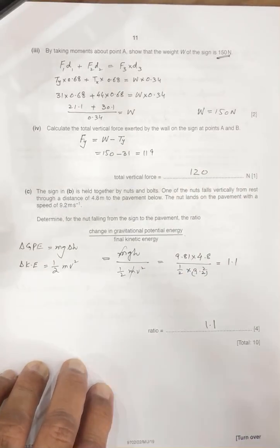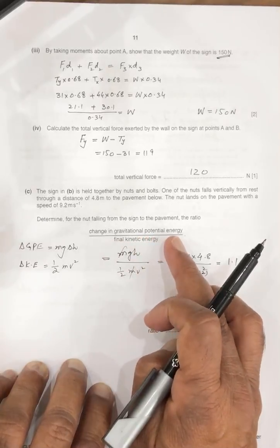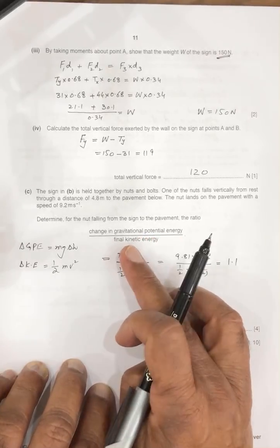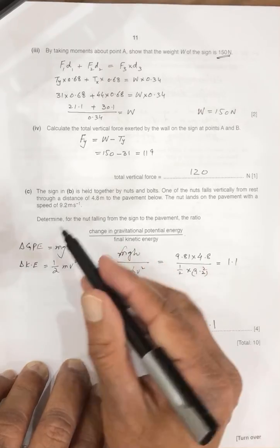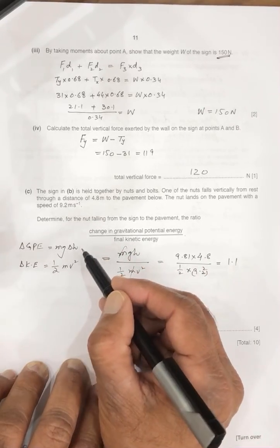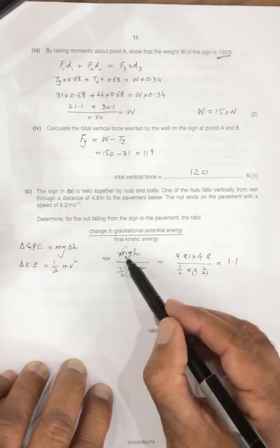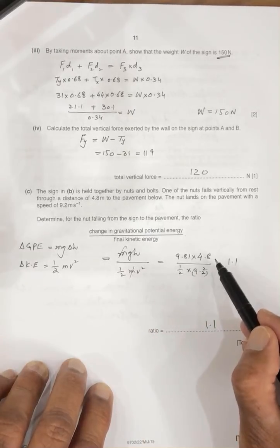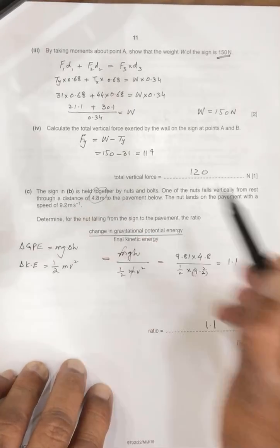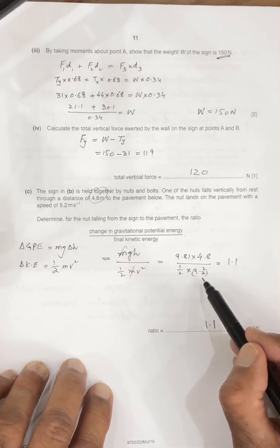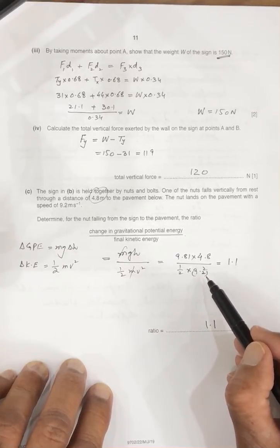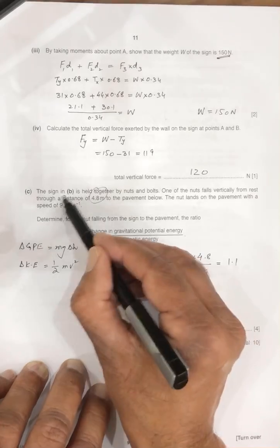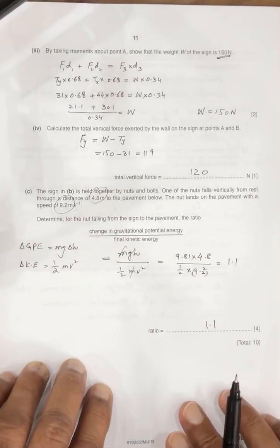Now, the next question is we have to calculate the ratio, the change in gravitational potential energy and the final kinetic energy. Look, gravitational potential energy Mg delta H, kinetic energy half mv square, Mgh over half mv square, M cancels, 9.81, and the height is given here 4.8, and 1 by 2 times the speed is also given 9.2, so 9.2 square is 1.1.